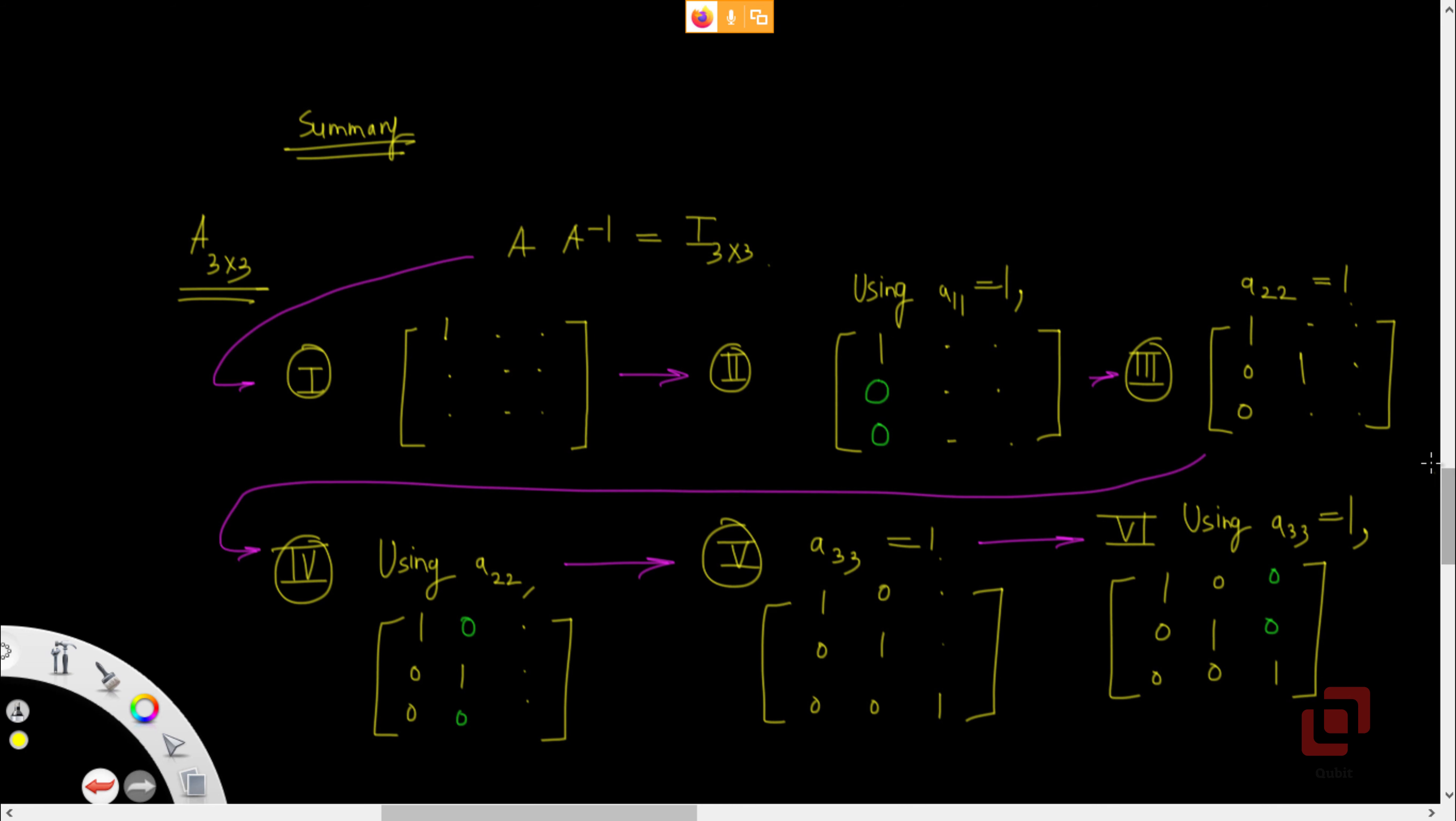The other thing which you should remember is that whatever operations you are performing on matrix A, please perform the same operations on the identity matrix as well. Because in many cases, what I have observed is, students correctly convert A into identity matrix. But they forget to perform the same operations in the same order on identity matrix. And that is the reason they don't get A inverse. What they think is, once we convert A into I, our job is done? No.